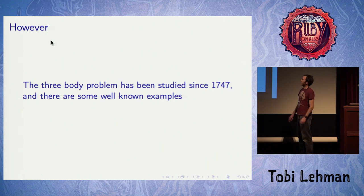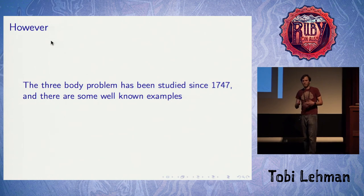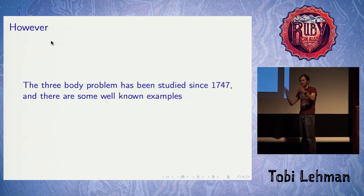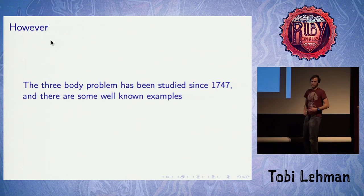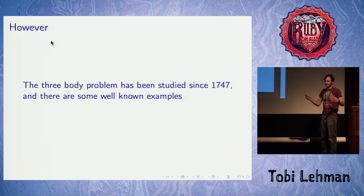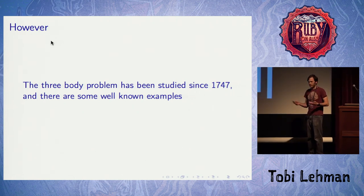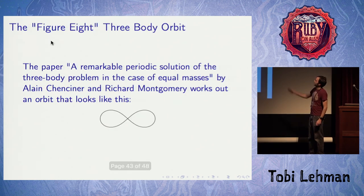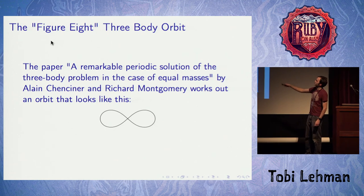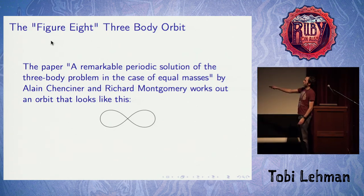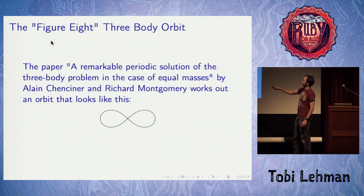The three-body problem has been studied for a really long time, so there are some examples with really nice symmetry. They have to be really highly symmetrical and they're brittle — rarely observed in nature because as soon as you have more than three bodies you easily get chaos. You might get stable orbits for a few billion years, but even something that seems stable like our own solar system can have chaotic tendencies over time. This great paper, only about 15 years old, found a three-body orbit that traces out an infinity shape — a lemniscate.